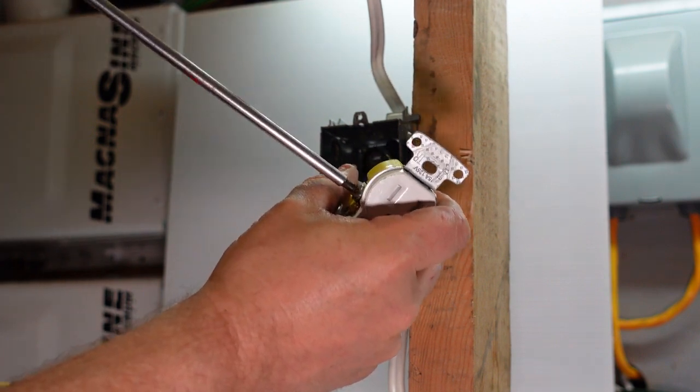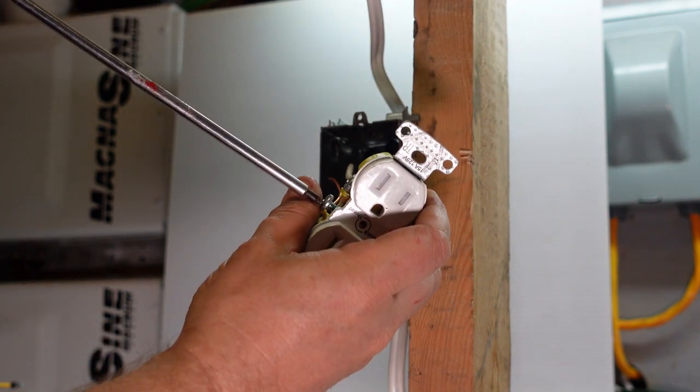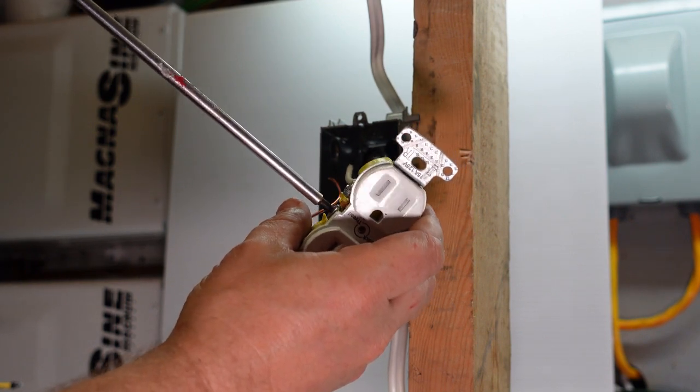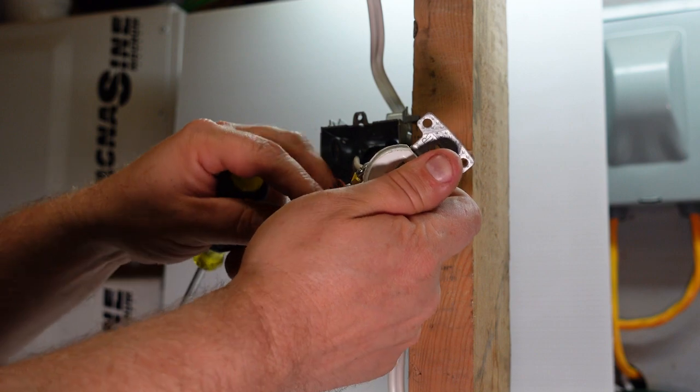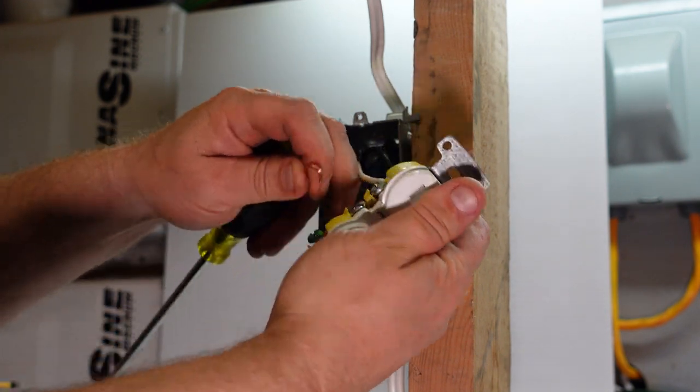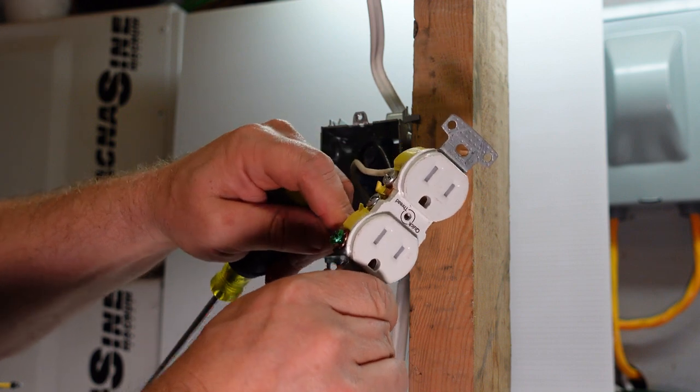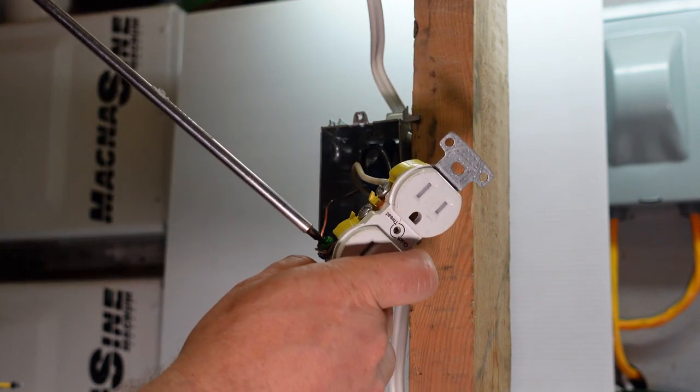Tighten up our spare neutral connection, identified conductor, silver screw, whatever you may want to call it, and then again with the copper wire onto the green screw is how we do it.